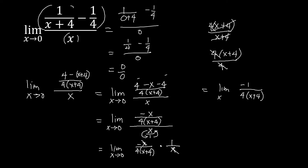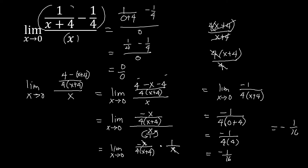As x approaches 0, we now do the substitution. We have negative 1 over 4 times (x is 0 plus 4). Simplifying, this is negative 1 over 4 times 4, which is 16. So the limit is negative 1 over 16.